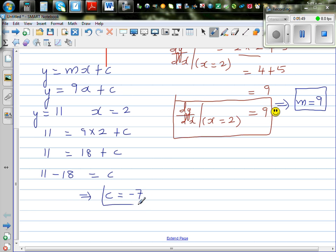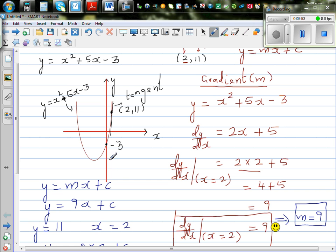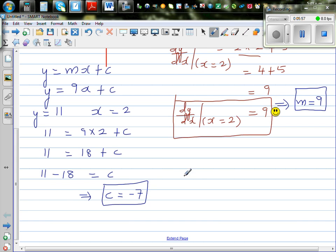And it does make sense. If you think about this line, it has to have a negative y intercept. So the answer makes sense. Therefore, you can say the equation of tangent is y equals 9x minus 7.